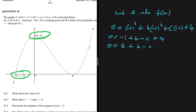Rearranging to make b the subject: b = -3 + c. We'll call this equation 1. Now we need another equation to solve simultaneously. We have coordinates for points A and C, and we've used point A, so now let's use point C differently.